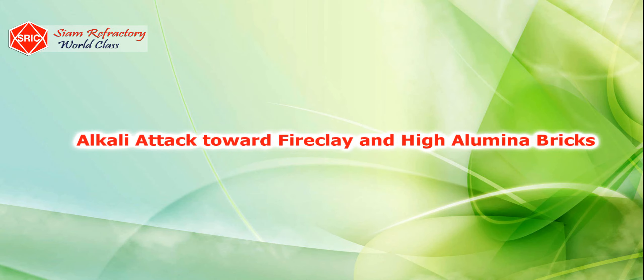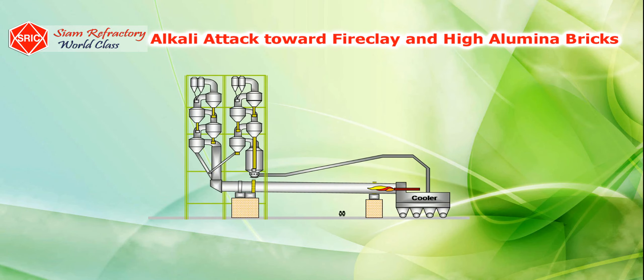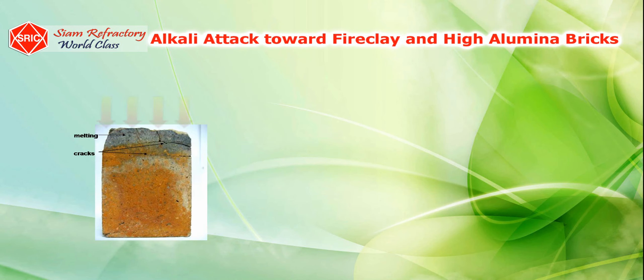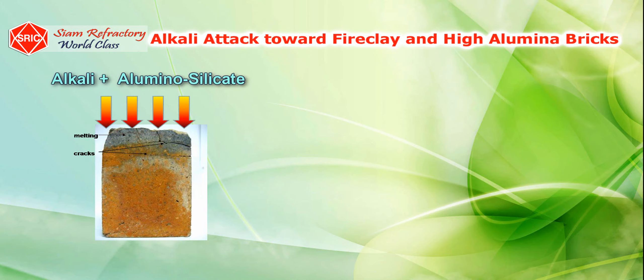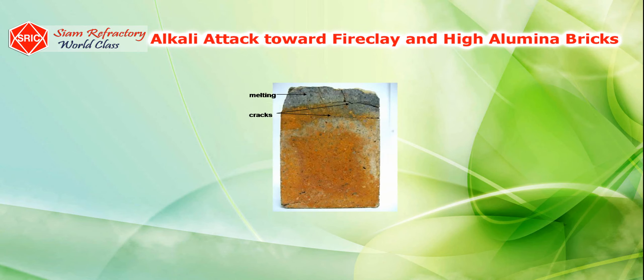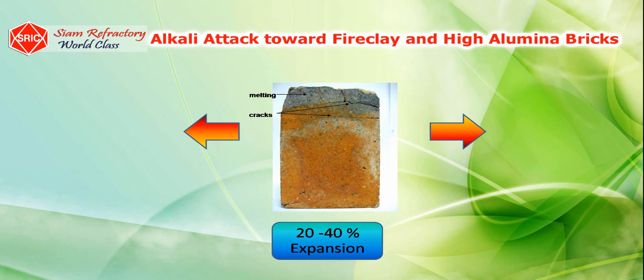For alkali attack toward fireclay and high alumina bricks, the service life of super-duty fireclay brick and high alumina brick at the inlet and safety zone of the rotary kiln can be significantly reduced when raw materials or industrial waste with high alkali content is fed. Excess alkali reacts with the aluminosilicate structure at the hot face of the refractory and transforms it to a lower-melting-point phase. Refractoriness and strength of refractory bonding are reduced, resulting in higher wear and tear, a shorter service life, and the volume of the refractory brick structure expanding by about 20% to 40%, resulting in cracks and deep spalling.